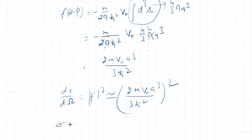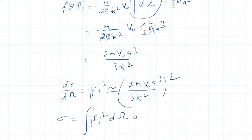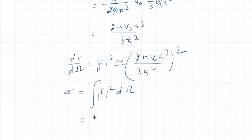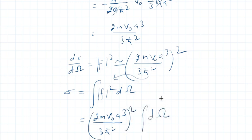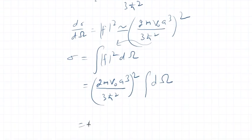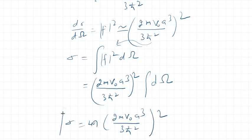So as I put its value here, it's a constant and it can be taken outside the integral. So it is nearly equal to (2m V₀ a³ / 3ℏ²)² into this, and integral of dΩ. Integral over dΩ is 4π, so the result will be 4π (2m V₀ a³ / 3ℏ²)². So this is the expression